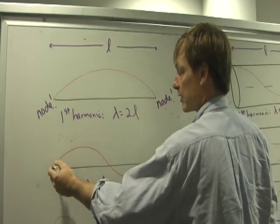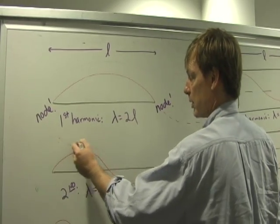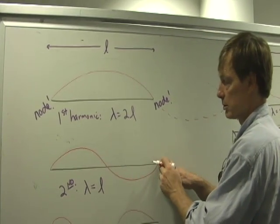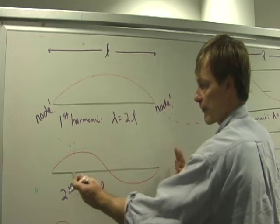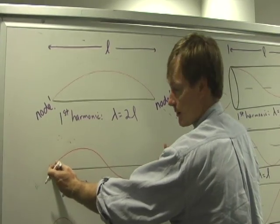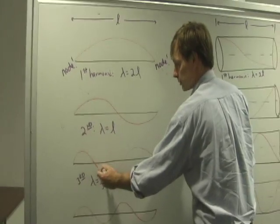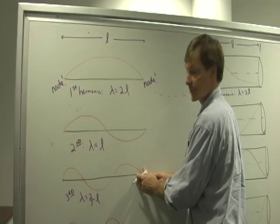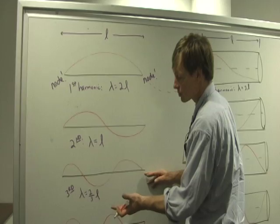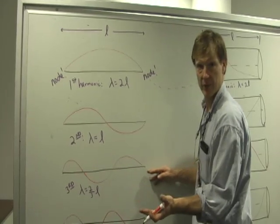Now, the next way I can stick a node in there. There's one node, there's two, there's my third node. Second harmonic. I fit exactly one wave in. The next time I can fit a node in, one, two, three. So I've got two thirds of a wave. I fit a wave and a half in there.